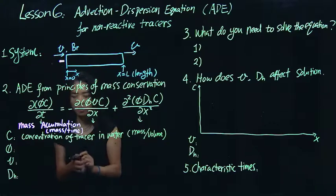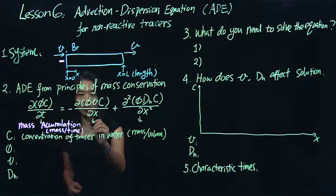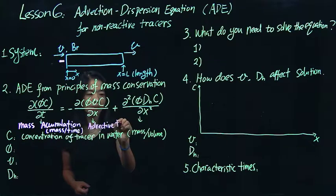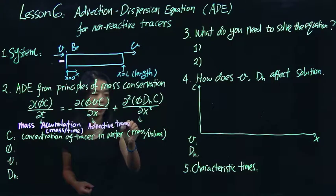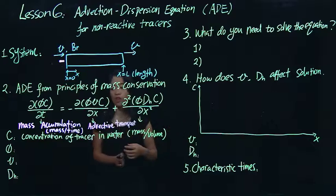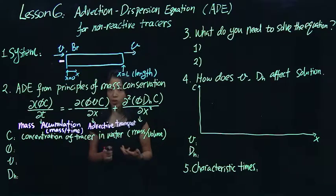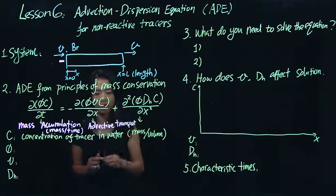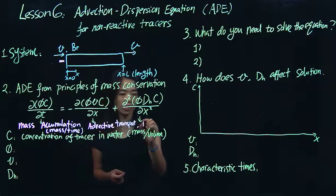Second term here, we call the advective transport. So this is a process where the chemical kind of, almost like you think about swimming, the chemical or the tracer essentially flows together with the water at the same speed as the water flow. So that's called advective transport.